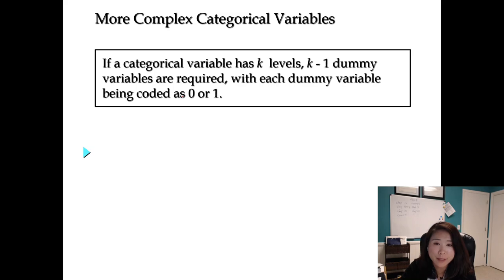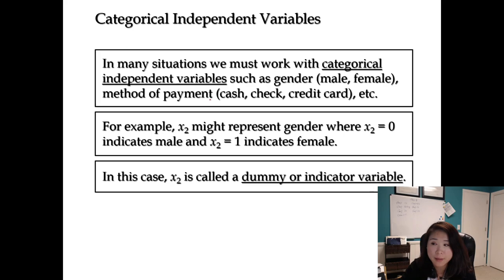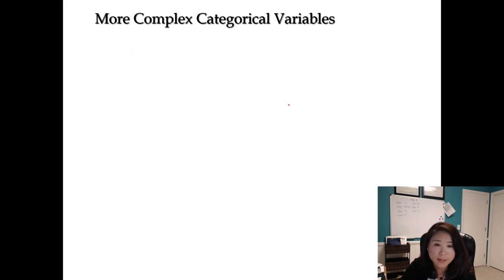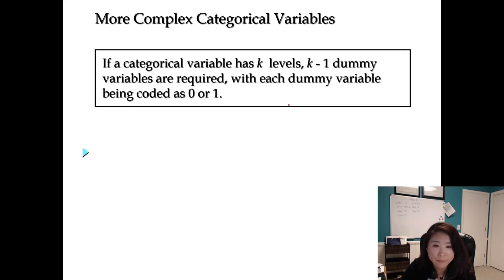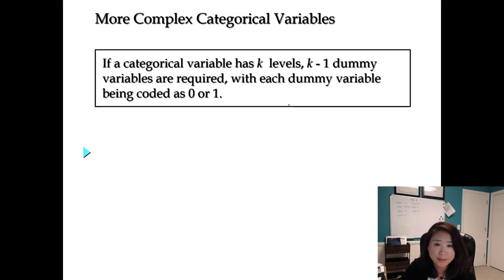You might ask: what about categorical variables with many categories? For instance, payment methods — cash, check, credit card — give you three different categories. But the dummy variable can only equal zero or one. How can you use zero and one to model three different categories? The answer is: you can increase the number of dummy variables. That gives us this conclusion: if a categorical variable has k levels, then k minus one dummy variables are required, each coded as zero or one. For example, class standing — freshman, sophomore, junior, senior — has four levels, so we need three dummy variables.